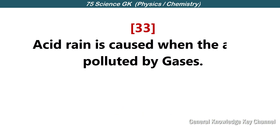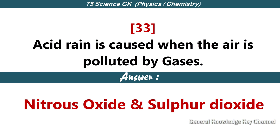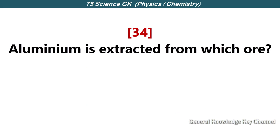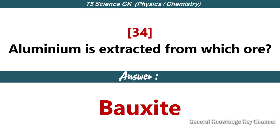Acid rain is caused when the air is polluted by gases — nitrous oxide and sulfur dioxide. Aluminum is extracted from which ore? Bauxite.